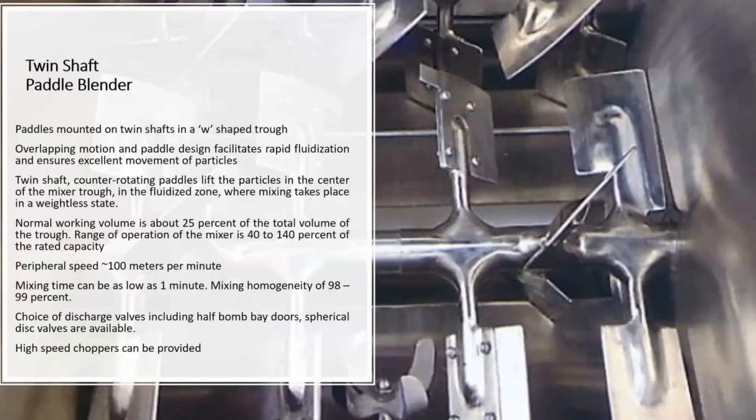The peripheral speeds are to the tune of 100 meters per minute and they can have extremely short mixing times, even as low as a minute. Mixing homogeneity can be high, 98 to 99%.